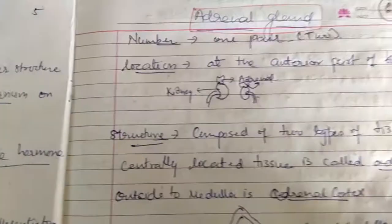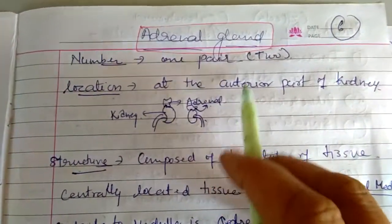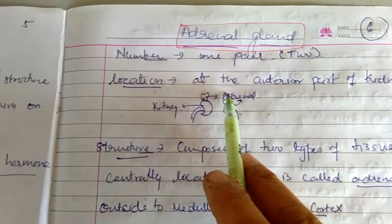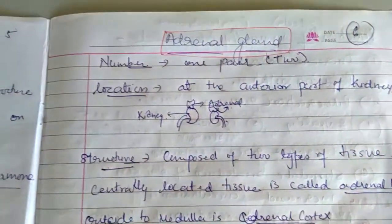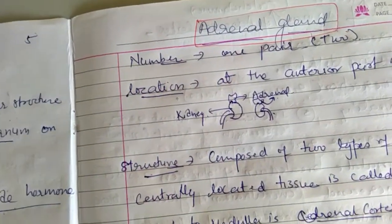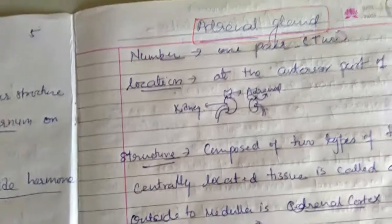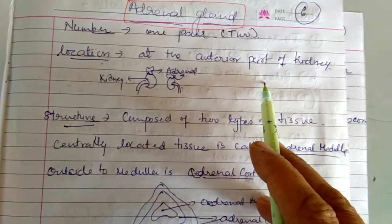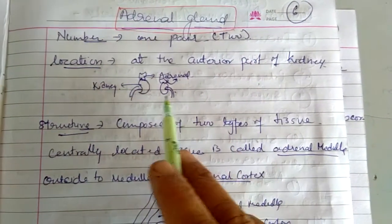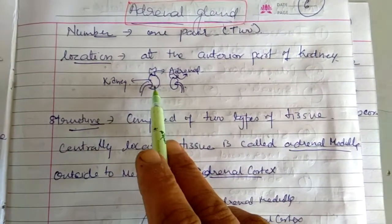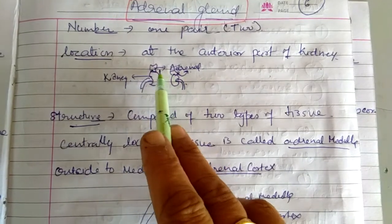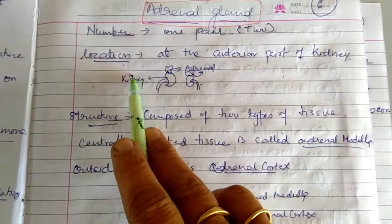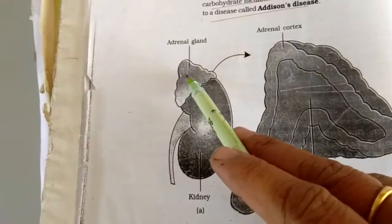Now we are coming to another gland — the adrenal gland. There is one pair of adrenal glands, and their location is that they are present on the anterior part of the kidney. Suppose these are the two kidneys — above the kidneys on the anterior part, the adrenal glands are there. In your book it is shown here: this is one kidney above which the adrenal gland is present.